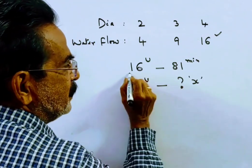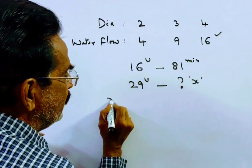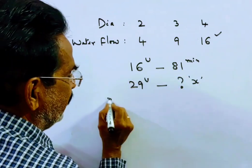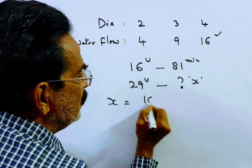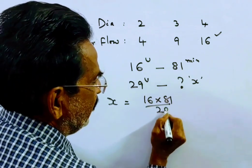So 29 into x is equal to 16 into 81. 29 into x equals 16 into 81. So x is equal to 16 into 81 by 29.